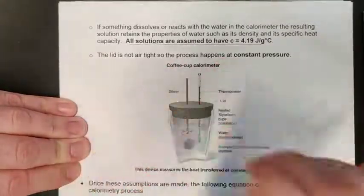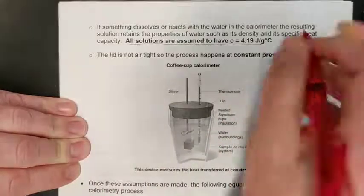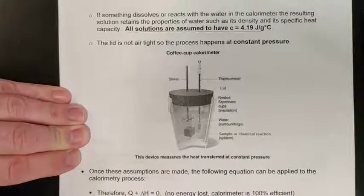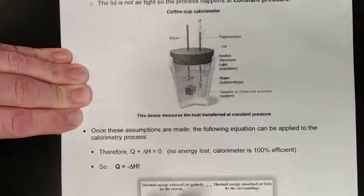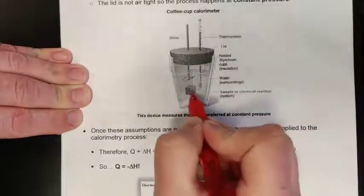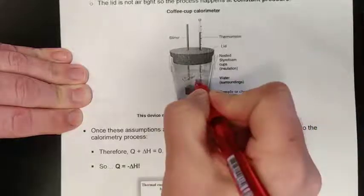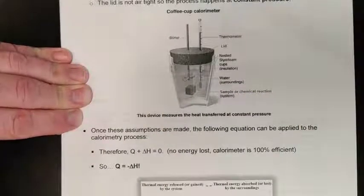The lid is not airtight, so this happens at constant pressure — otherwise known as an open system, if we think back to our gas laws. We have our coffee cup calorimeter with the sample or system, the water surroundings, and q is either going to the surroundings or to your sample depending on whether the reaction is exothermic or endothermic.